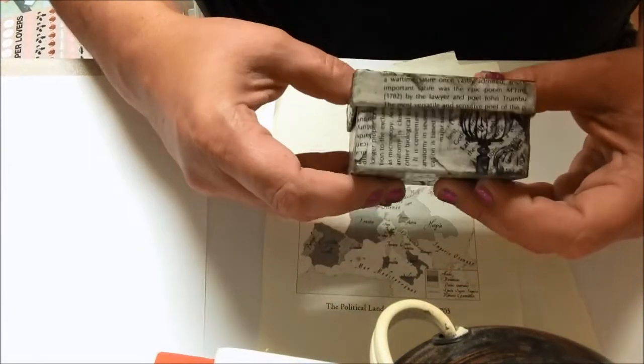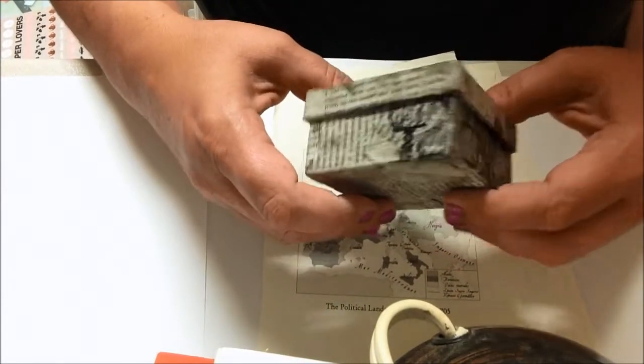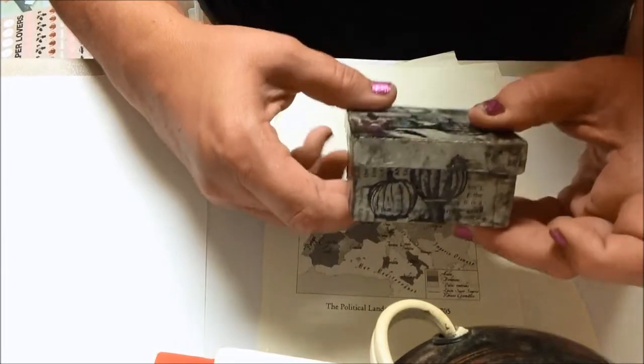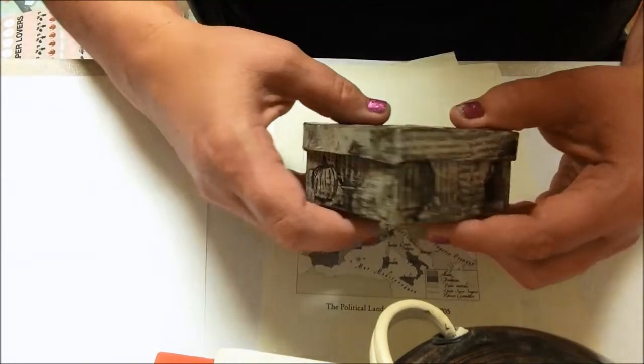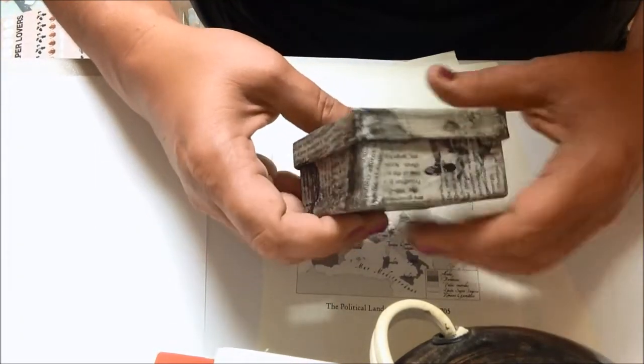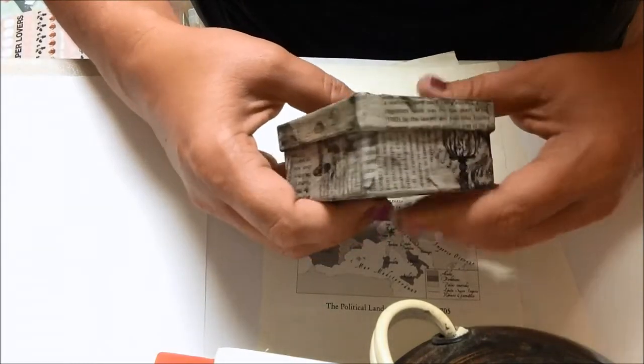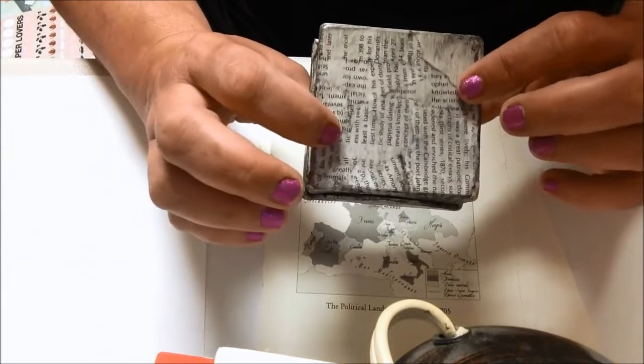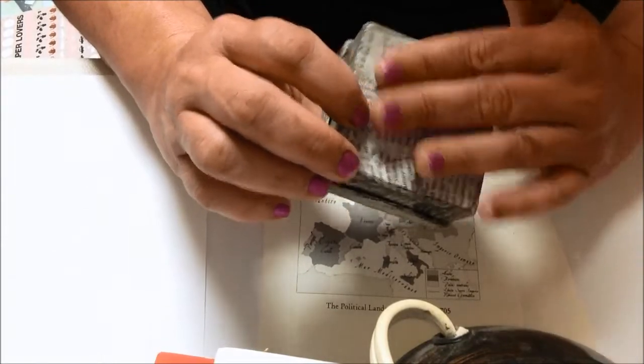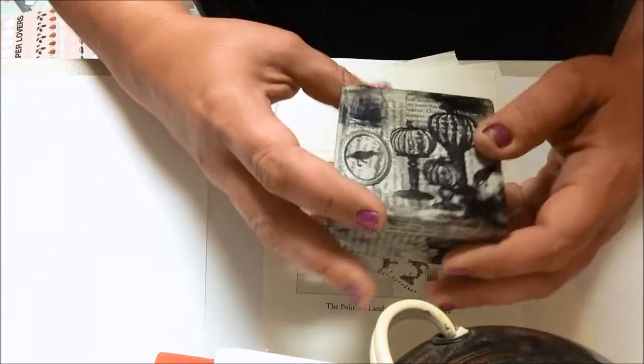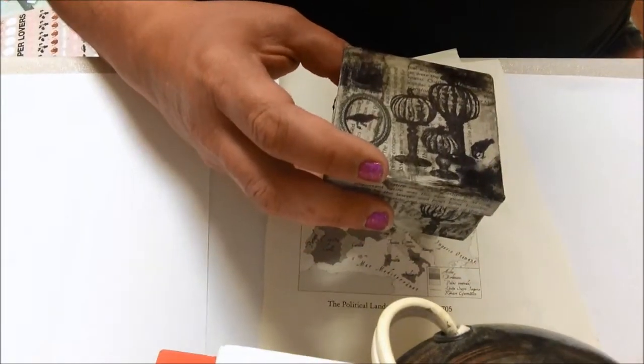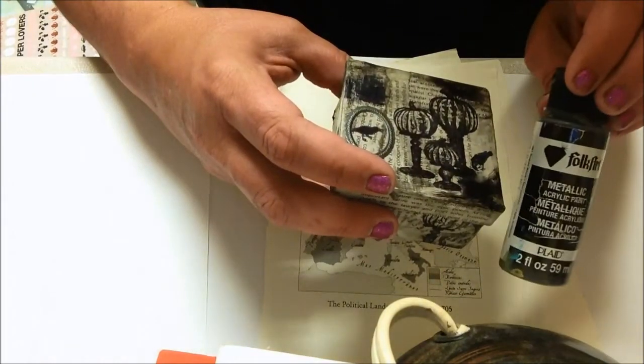As you can see, I stamped all the way around the images, mod podged the book pages, then just went over it with a little bit of black paint.